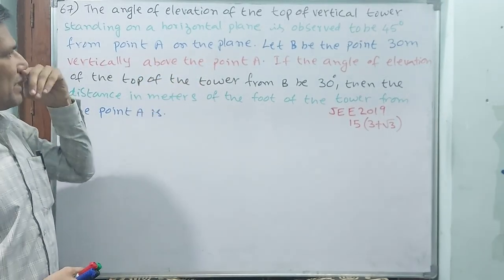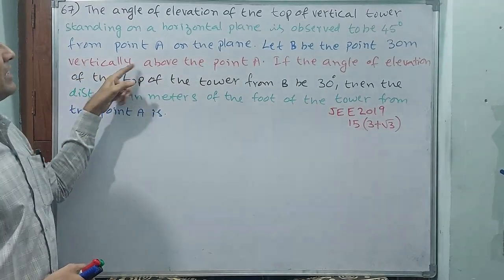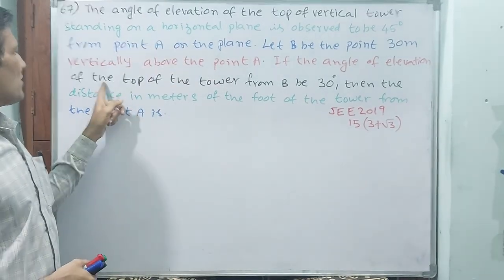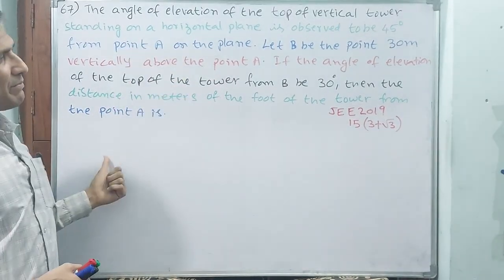On the plane, let B be the point 30 meters vertically above point A. If the angle of elevation of the top of the tower from point B is 30 degrees.